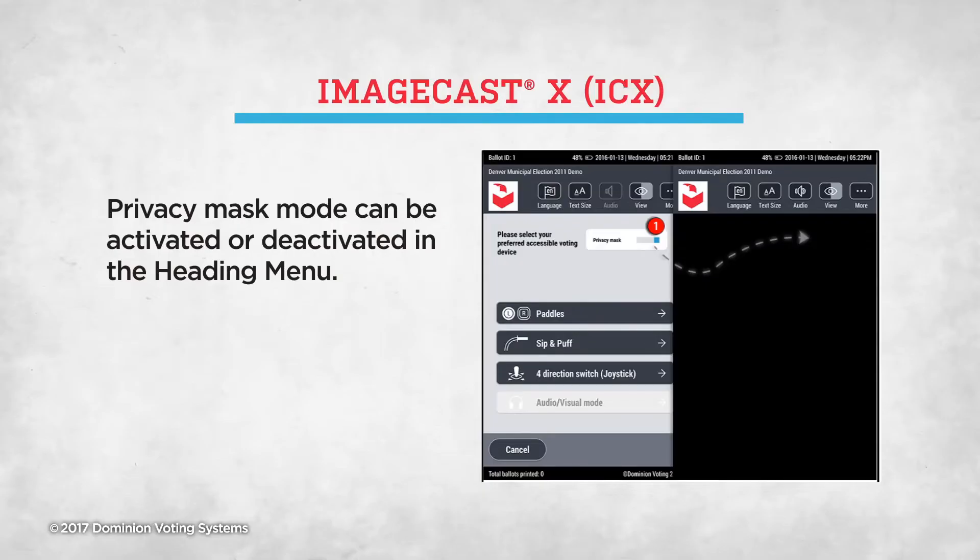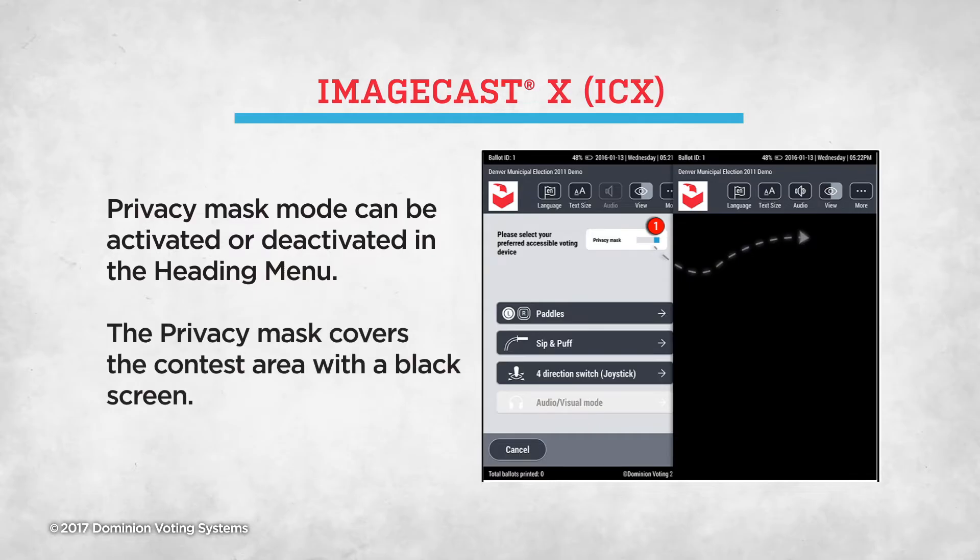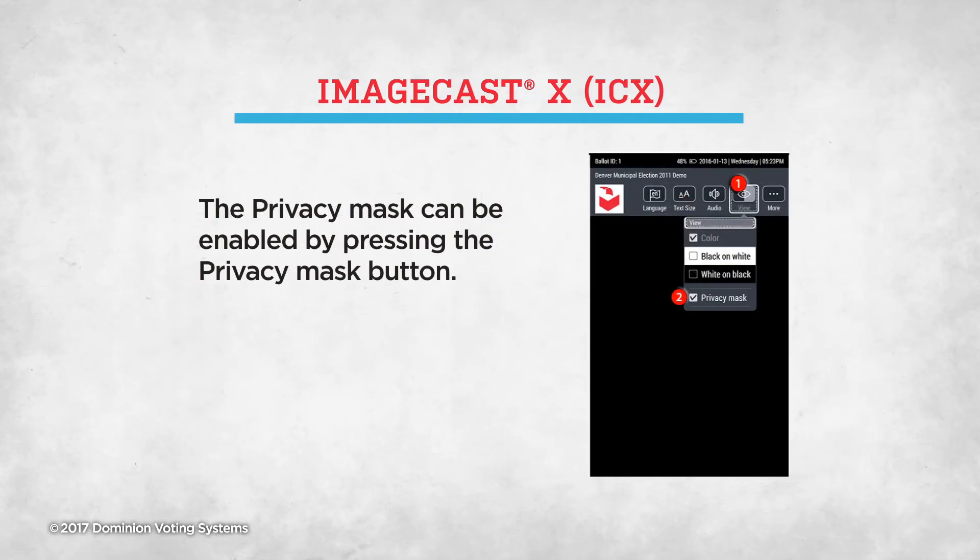The Privacy Mode can be activated or deactivated in the heading menu bar. A black screen appears where the ballot contest area would be. The Privacy Mask can be enabled by pressing the Privacy Mask button. Privacy Mode is not available in the audiovisual mode.